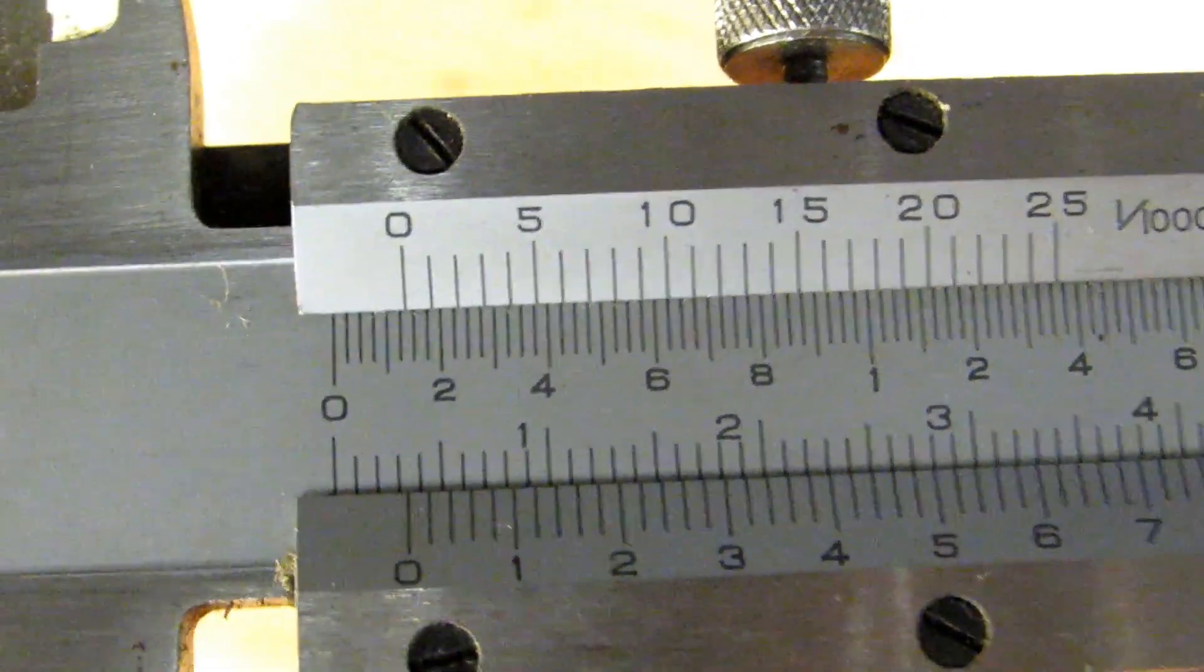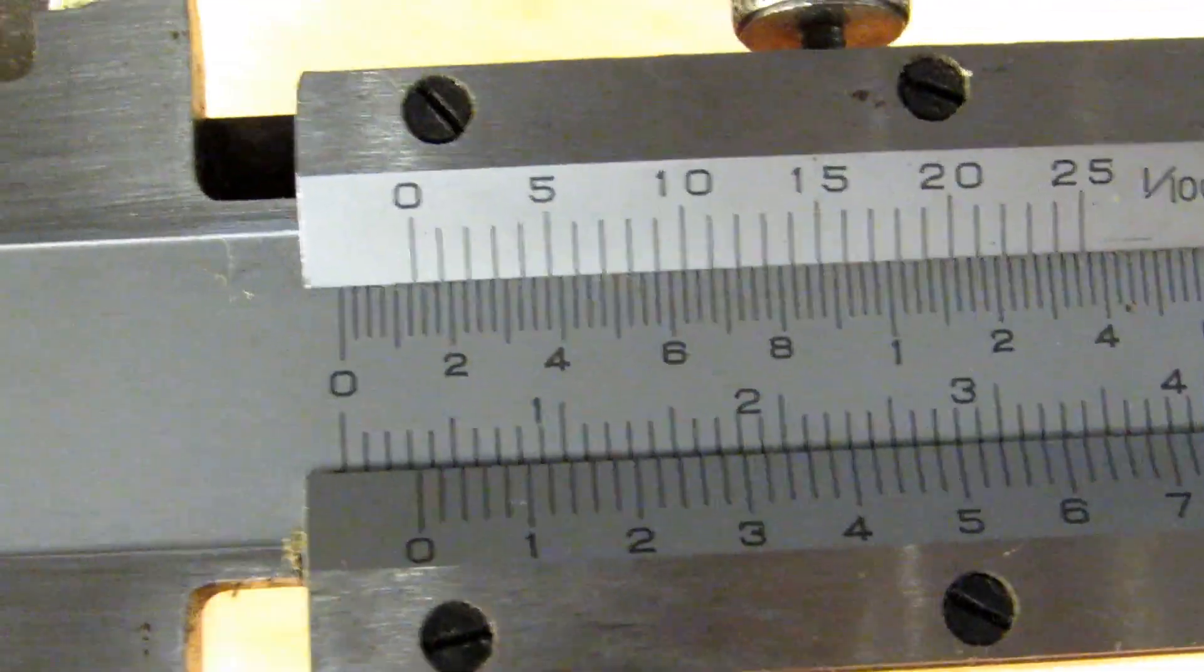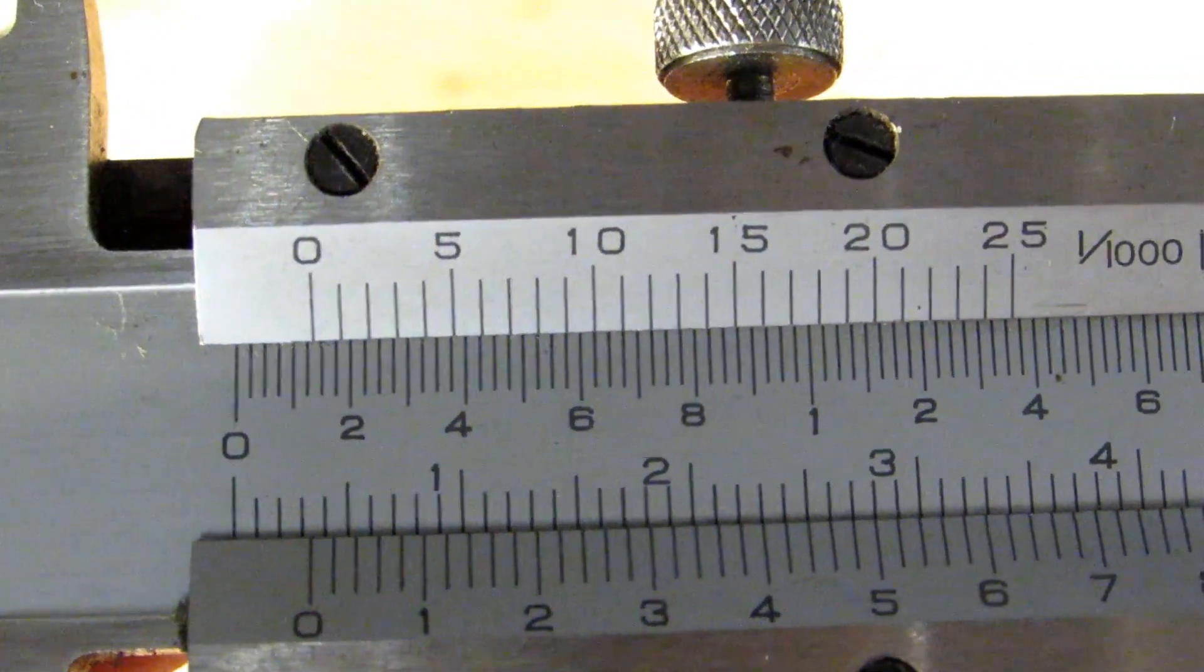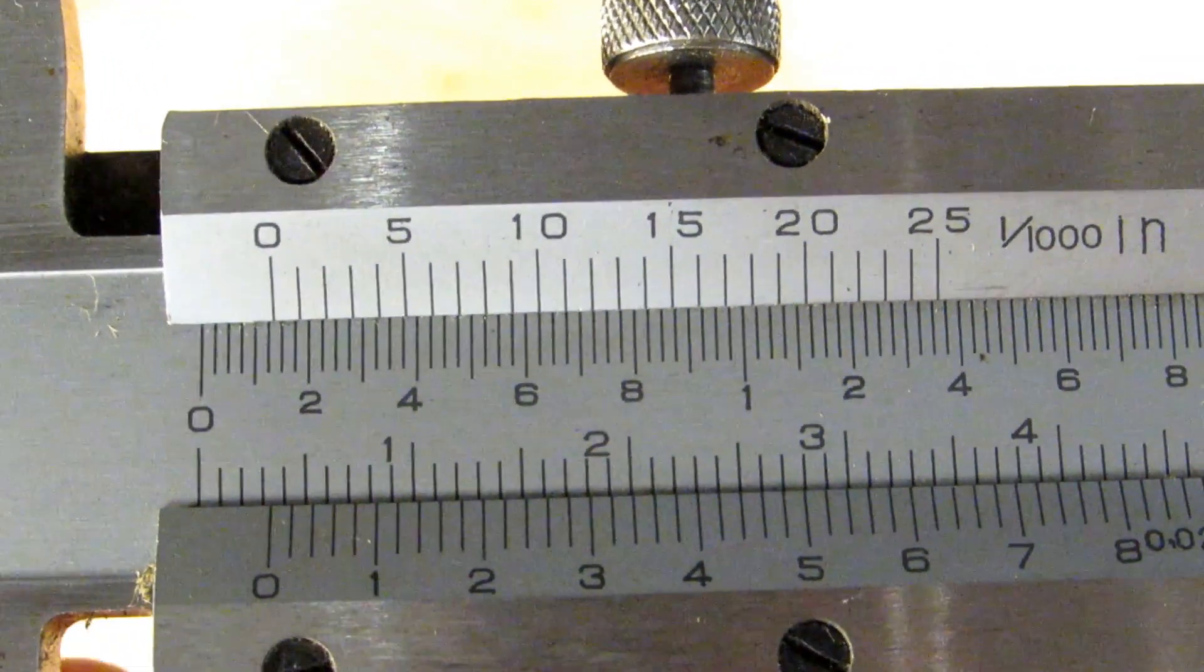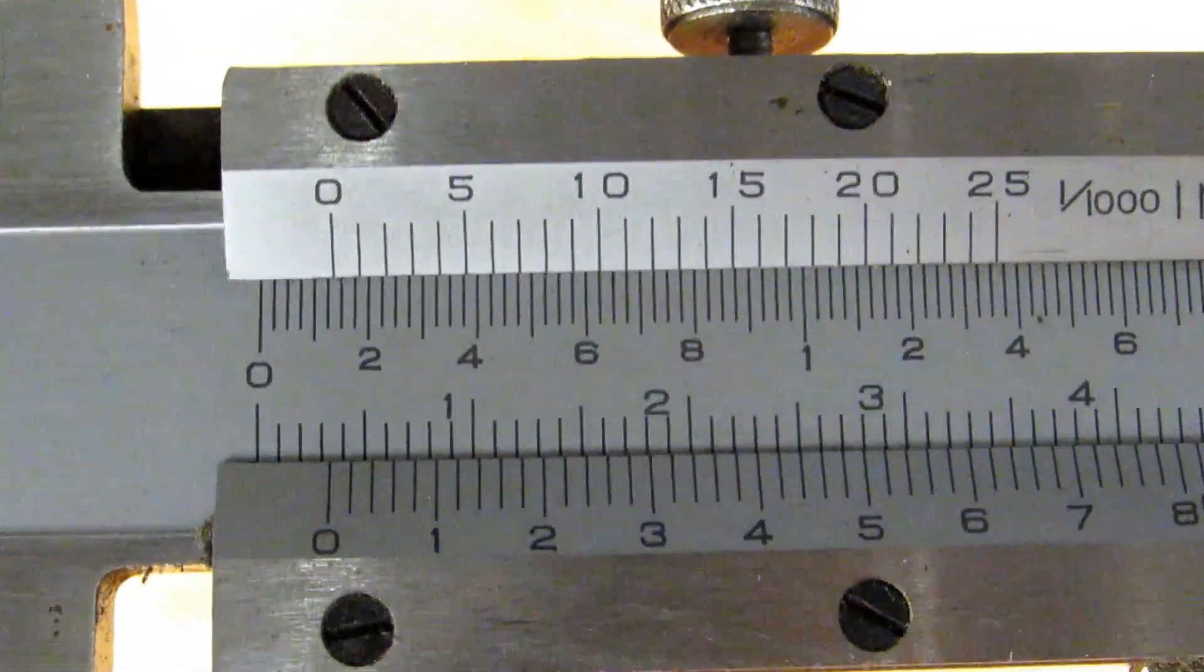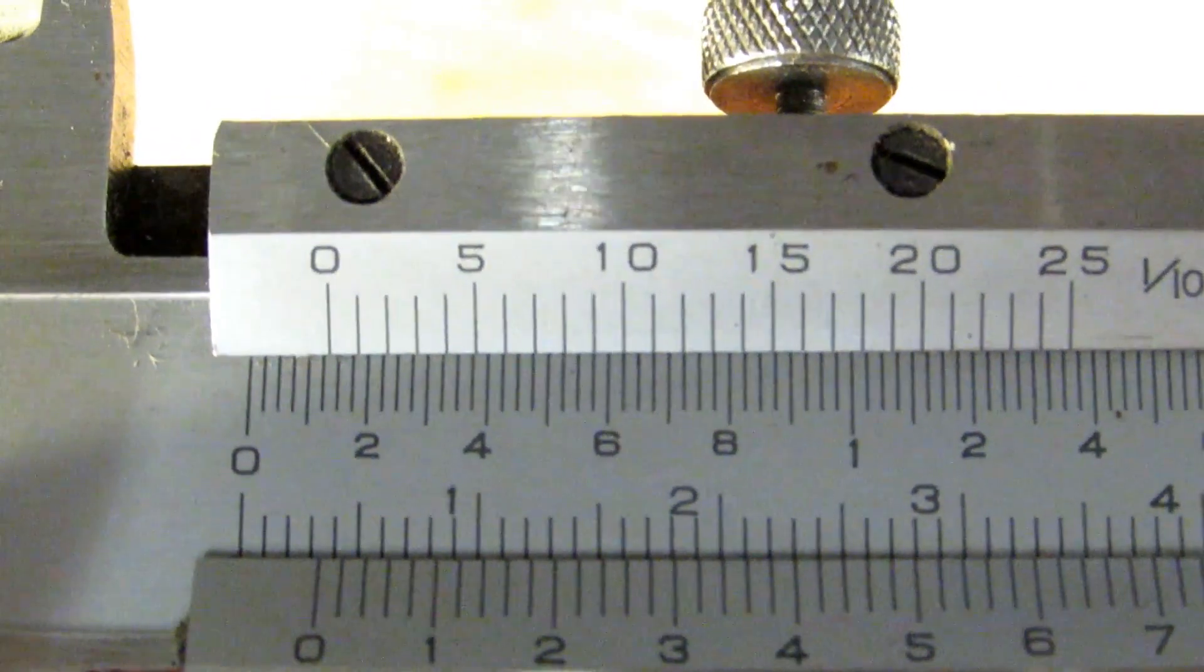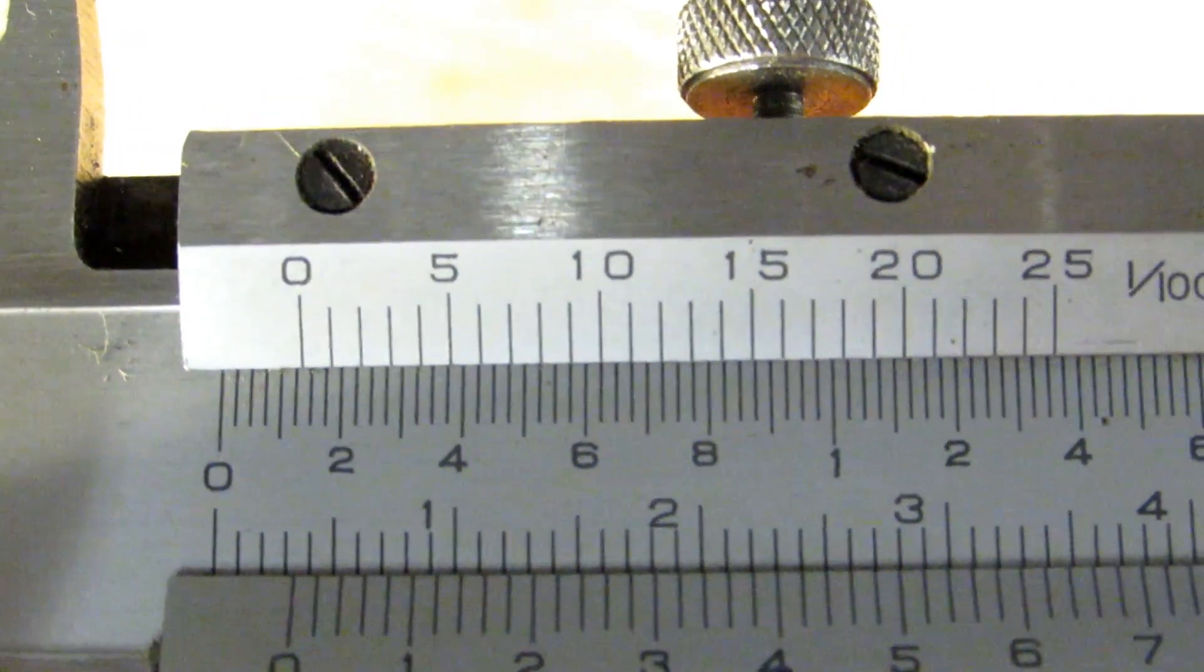And again just like on my demo where it's very easy to see you're looking at the graduations on either side of the one that's lined up as well to see if they are or are not lined up. One should be offset one way the other should be offset the other. So that's the telltale sign of which one is the correct graduation on the vernier scale.